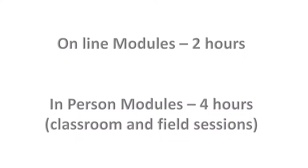A coach, upon completion of the Introduction to Grassroots Coaching module, has the option of taking an online module which is two hours in length, or the in-person module which is highly recommended, which is four hours and includes classroom and field sessions. These modules are offered at the 4v4, 7v7, 9v9, and 11v11 categories.